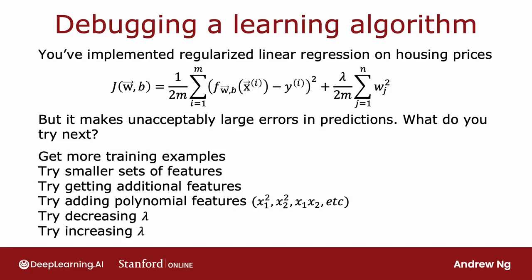And these were the six ideas that we had when we looked over this slide earlier: to get more training examples, try a smaller set of features, additional features, and so on.